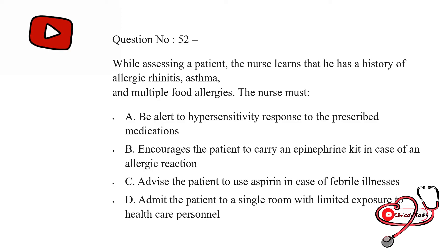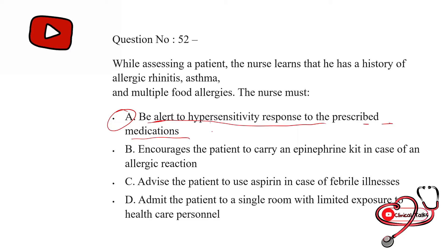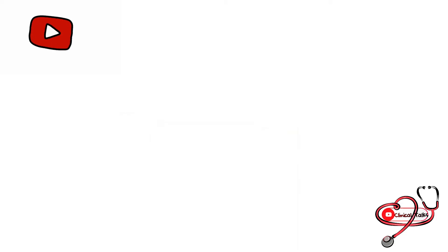While assessing a patient, the nurse learned that he has a history of allergic rhinitis, asthma, and multiple food allergies. The nurse must: option first: be alert to hypersensitivity responses to the prescribed medications; second: encourage the patient to carry an epinephrine kit in case of allergic reactions; third: advise the patient to use aspirin in case of febrile illness; last: admit the patient to a single room with limited exposure to healthcare personnel. The correct answer is A — be alert to hypersensitivity responses to prescribed medications.